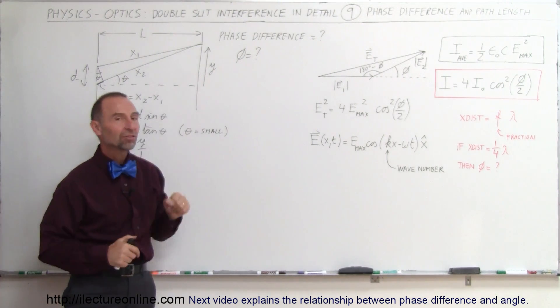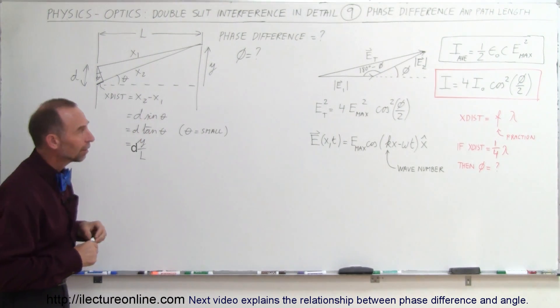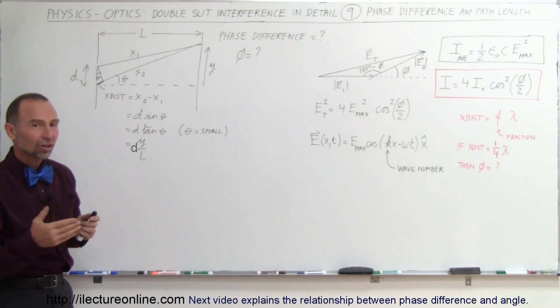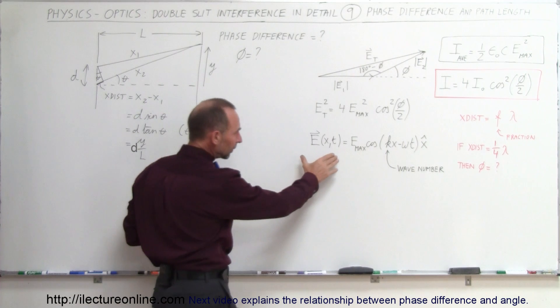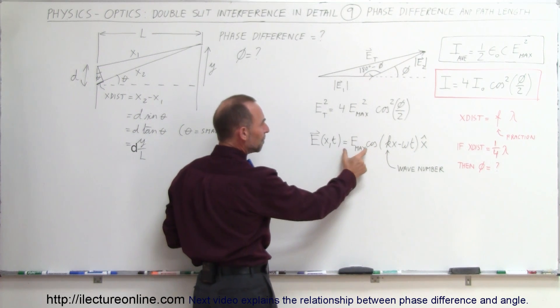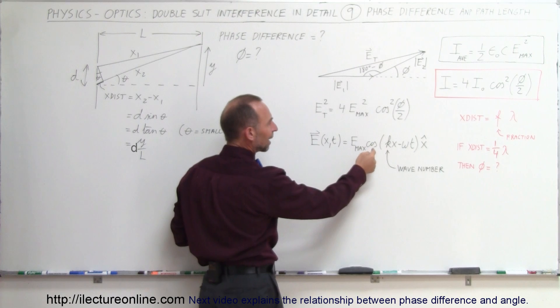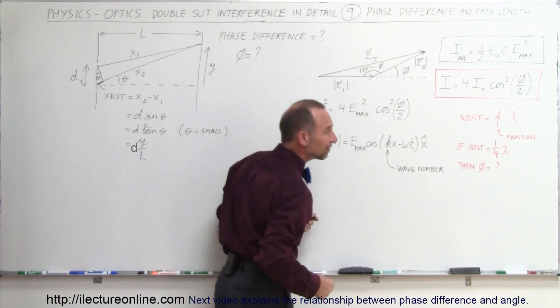Here we want to find out what is the phase difference between those two. Well, we can go back to the general equation of a wave: E equals E_max times the cosine of kx minus omega t. You might remember that equation from your mechanics.